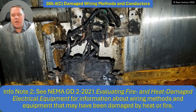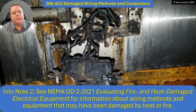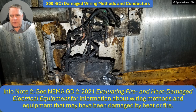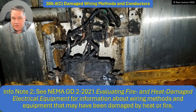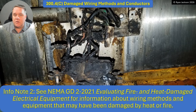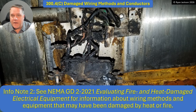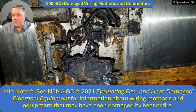The other thing added is an informational note pointing to NEMA Guideline 2-2021: Evaluating Fire and Heat Damaged Electrical Equipment — for information about wiring methods and equipment that may have been damaged by heat or fire. Clearly the wiring in a fire scene needs to be replaced. But what about the conduit, the boxes? There may be guidelines in the NEMA document, or check with the manufacturer — for example, what kind of damage does this do to the galvanization of a steel conduit where the zinc is applied?